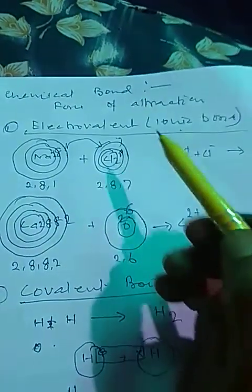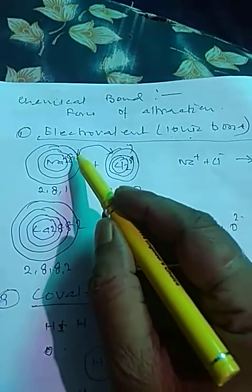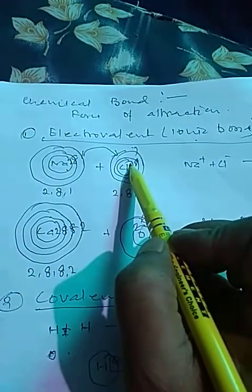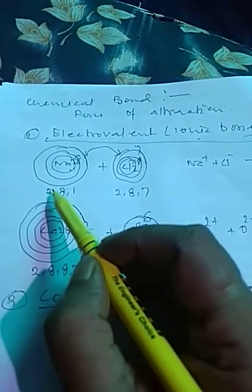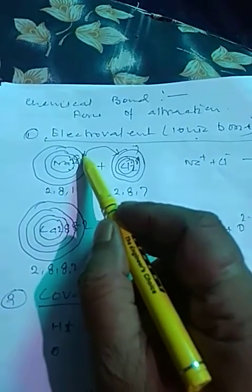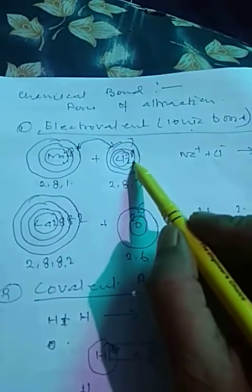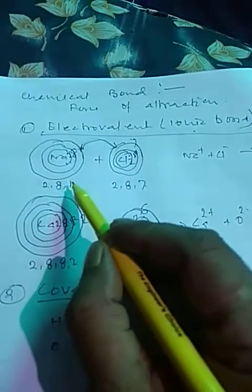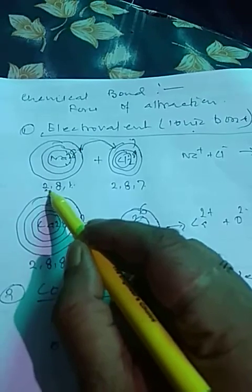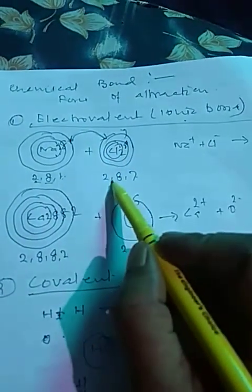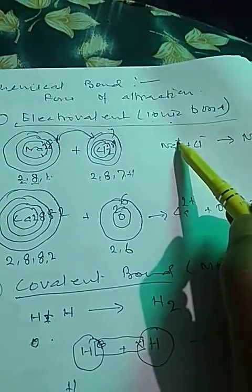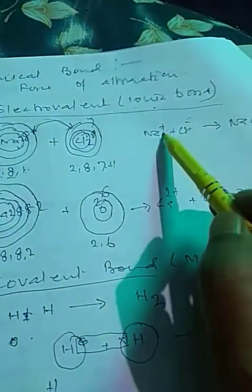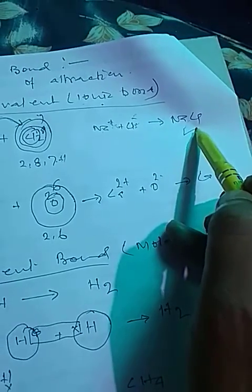What is Electrovalent Bond? The chemical bond which is formed by the transfer of one or more electrons from one atom to another atom. Here, this is your sodium — it has 11 electrons, configuration 2, 8, 1. The outermost valence electron is transferred to chlorine, which has 7 electrons in its valence shell. After transfer of one electron, sodium's configuration becomes 2, 8 and chlorine's becomes 2, 8, 8. As a result, this forms sodium ion and chlorine becomes chloride ion. These two opposite charges attract each other and form a molecule of sodium chloride.